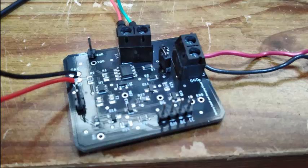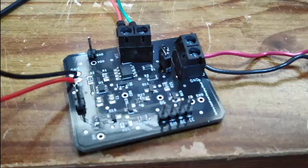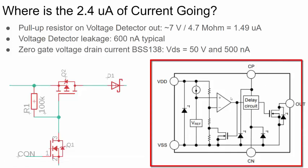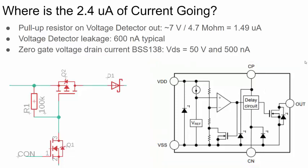Let's talk about, we saw about 2.4 microamps, let's talk about where that current is going and why we have to be mindful of the components we're using. Okay, so where is the 2.4 microamps of current going? Remember this is the simplified block diagram of the voltage detector.